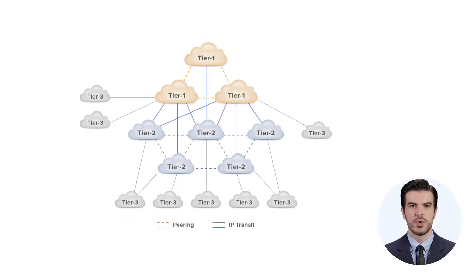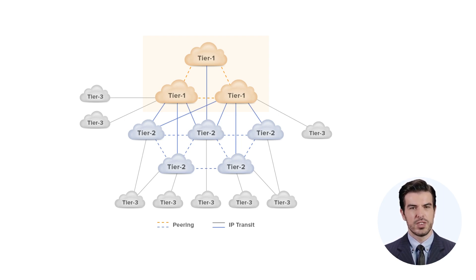ISPs are organized into a hierarchical structure that consists of three tiers. Tier 1 transit providers have a global reach and are considered the backbone of the internet — they do not buy transit service and peer with each other at zero cost. Such networks connect lower-tier ISPs and charge them to allow traffic to transit their networks. Tier 2 providers have large networks and a wide global presence; they peer with each other to reduce costs associated with IP transit.